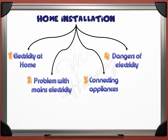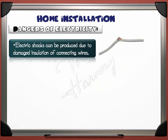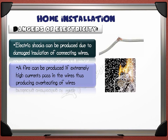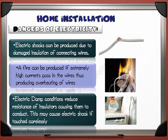Dangers of electricity: electric shocks can be produced due to damaged insulation of connecting wires. A fire can be produced if extremely high currents pass in the wires, causing overheating of the wires. Damp conditions reduce the resistance of insulators, causing them to conduct, which may cause electric shock if touched carelessly.